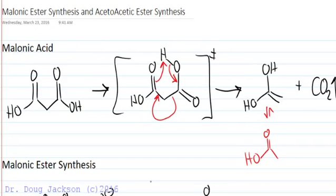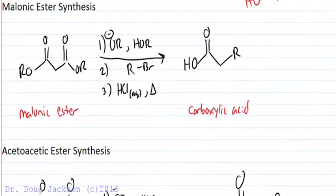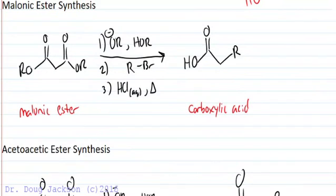We can take advantage of that. It's not very useful for malonic acid, but it is very useful if we form esters from malonic acid where we substitute both ends with an ester group through esterification, and then we can derivatize a carboxylic acid in this way.